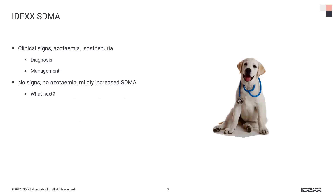There are situations where we might see SDMA increased. Some patients will have clinical signs of kidney disease — PUPD, inappetence, weight loss, dehydration, gastrointestinal signs like vomiting, pallor from anemia, or oral ulceration. If they're also azotemic and isosthenuric, everyone knows how to deal with those patients: diagnostics to look for underlying causes, management with diet, rehydration, and phosphorus management.